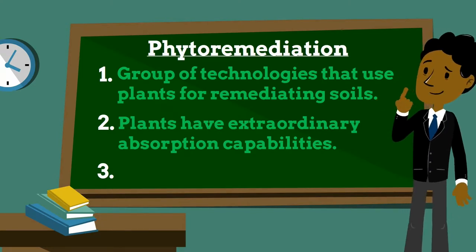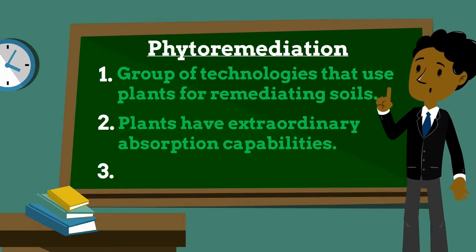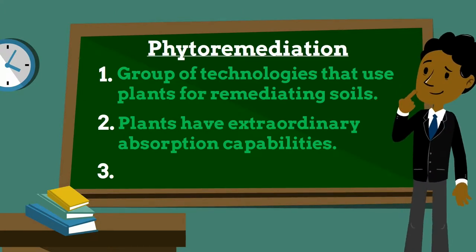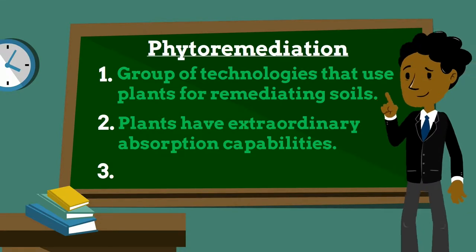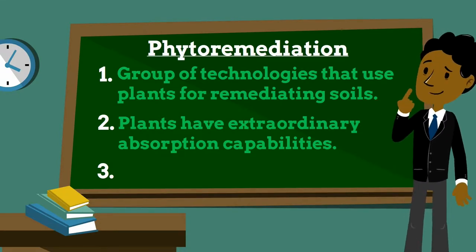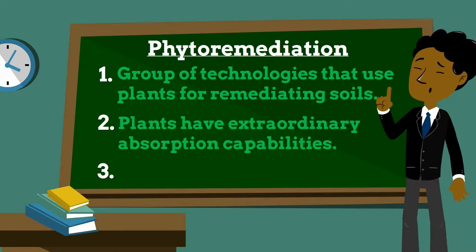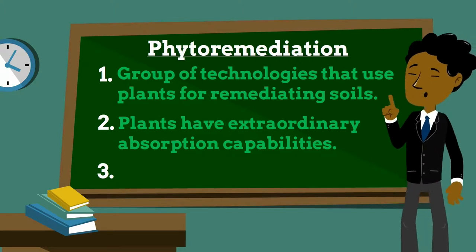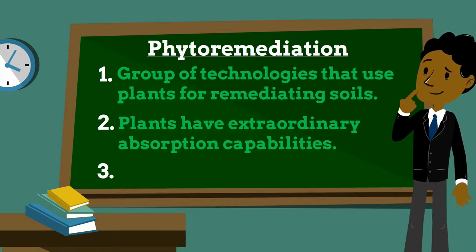Plants are unique organisms equipped with remarkable metabolic and absorption capabilities, as well as transport systems that can take up nutrients or contaminants selectively from the growth matrix — soil or water. Phytoremediation involves growing plants in a contaminated matrix for a required growth period to remove contaminants from the matrix or facilitate immobilization or degradation of the pollutants.